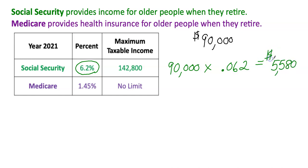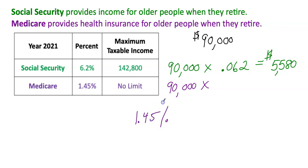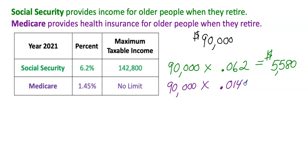Now let's do the Medicare tax. We take 90,000 times 1.45 percent. Using the butt cheek method, move the decimal back two places — 1.45 percent becomes 0.0145. So 90,000 times 0.0145 equals $1,305.